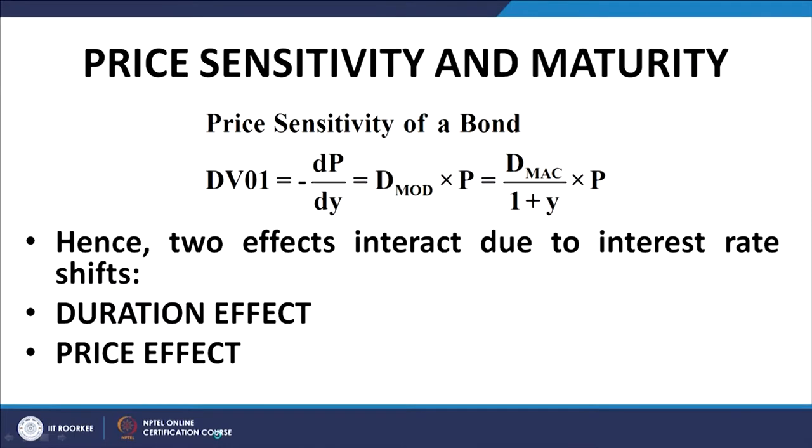Welcome back. Before the break I was talking about price sensitivity, and I defined price sensitivity to be synonymous with DV01 — the dollar value per basis point — that is the negative slope of the yield-price curve at any given point, and it is mathematically written as dP/dY.